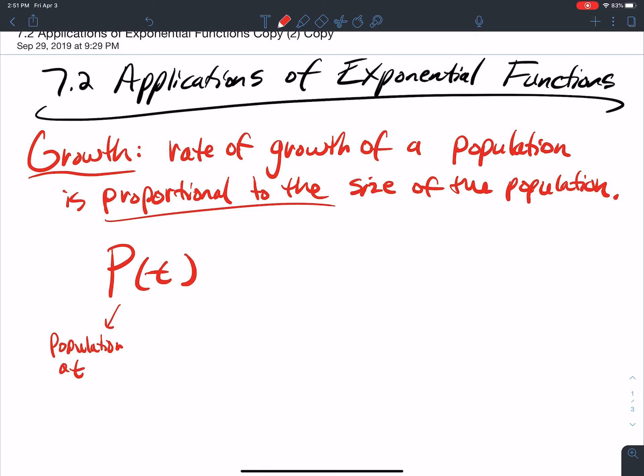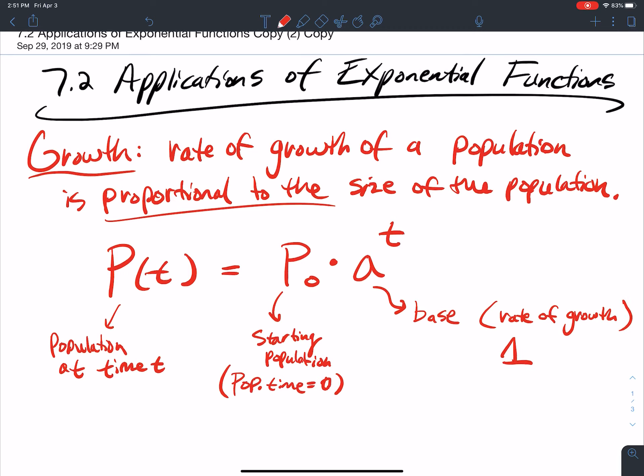So at time t is equal to P naught, which is your starting population. This is how big your population is at time equal to zero. That's the starting population, multiplied by a raised to the t, where a is the base. This is the rate of growth. Whatever that rate is, to find the base, you do one.